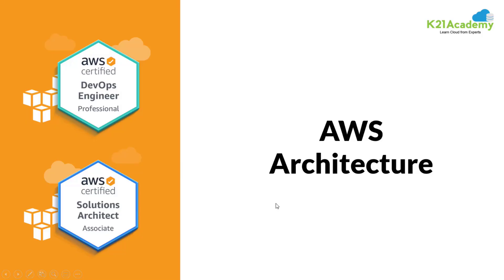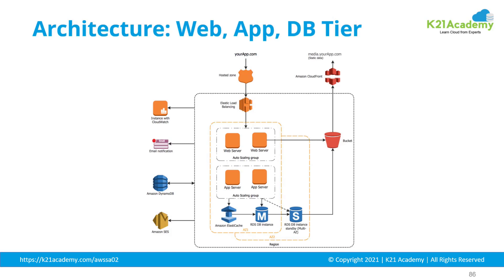Welcome back. In this second last module, we are going to look at AWS architecture and tie everything together that we have learned so far, especially regarding AWS services. This is a three-tier architecture where you have a database tier, an apps tier, and a web tier. The outer dotted line represents the region in which you have deployed that application.